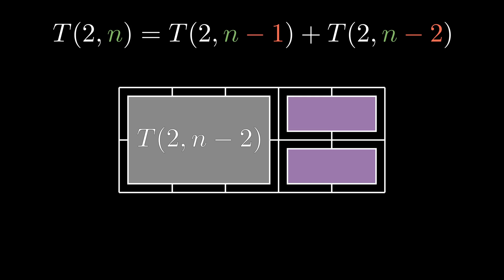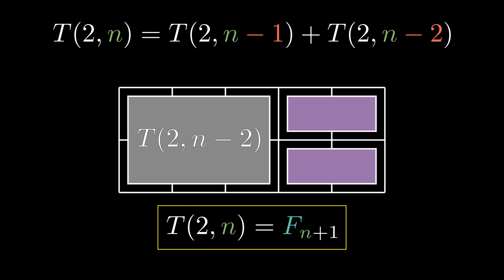And so we have the formula t(2, n) equals t(2, n−1) plus t(2, n−2). Does this look familiar? We have t(2, 1) equals 1 and t(2, 2) equals 2. This is just the (n+1)th Fibonacci number.